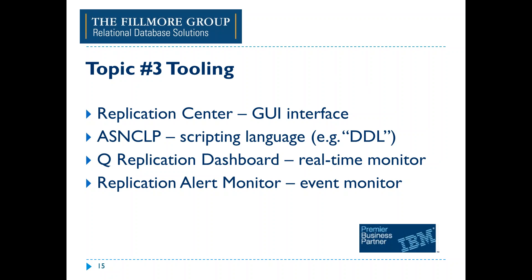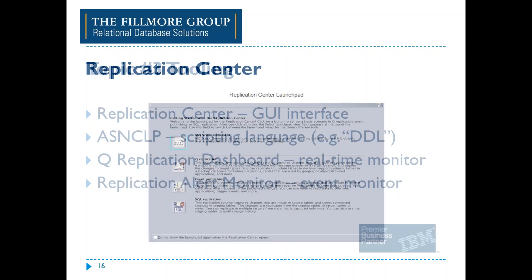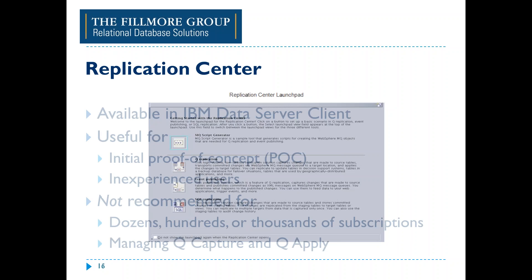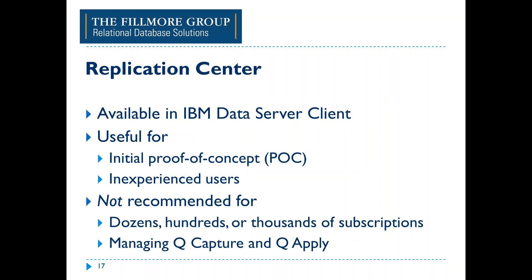The next topic is tooling. None of the next set of slides should come as a surprise to someone currently using Q replication. All of these products — the Replication Center, ASN CLP, Q Replication Dashboard, and the Replication Alert Monitor (also known as ASN Mon) — you should hopefully be familiar with. The Replication Center is a Java-based GUI that first came out in DB2 for LUW version 5. It's been around for at least a decade and a half, and is currently installed via the IBM Data Server Client, downloadable for free from IBM.